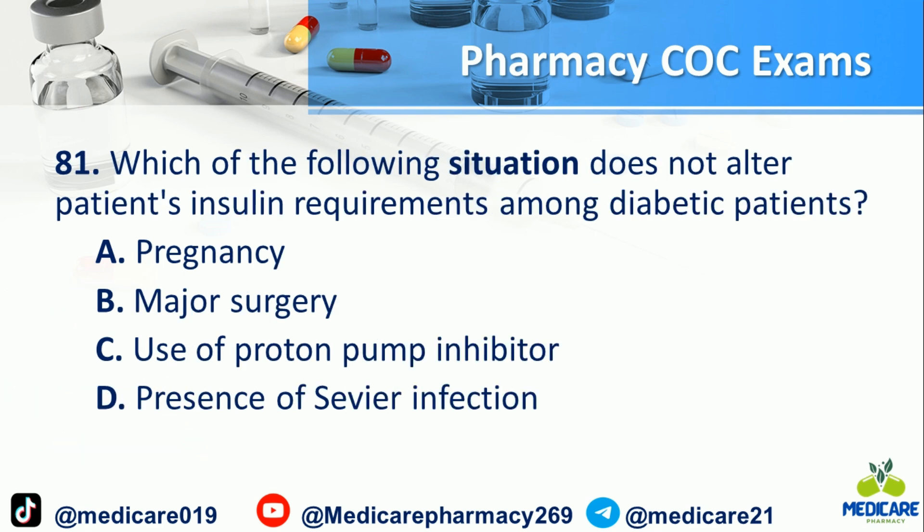Number 81: Which of the following situations does not alter a patient's insulin requirements among diabetic patients? a. Pregnancy. b. Major surgery. c. Use of proton pump inhibitor. d. Presence of severe infection. The answer is C.